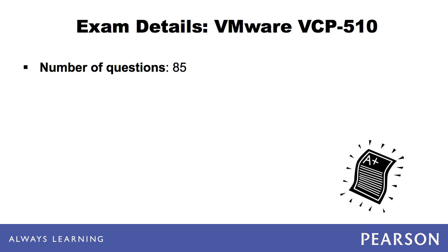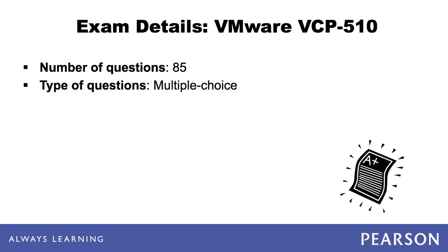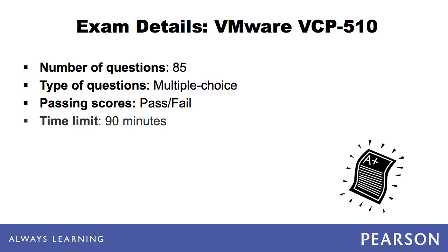Note that there is also a short pre-exam survey. The questions are all multiple choice. The exam is pass-fail — a score of 300 or above out of 500 is considered passing. You have an hour and a half to take the exam, with an additional 15 minutes to take the pre-exam survey.